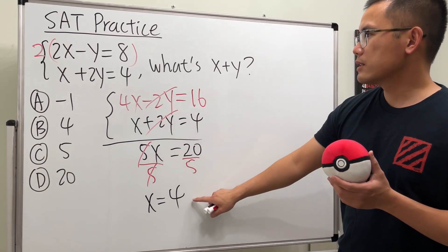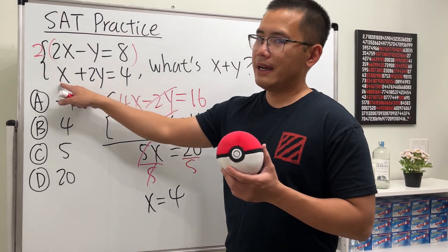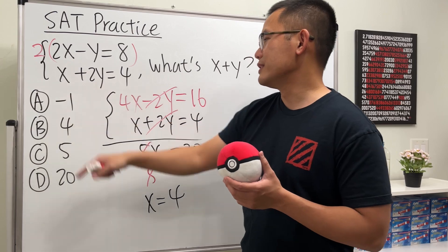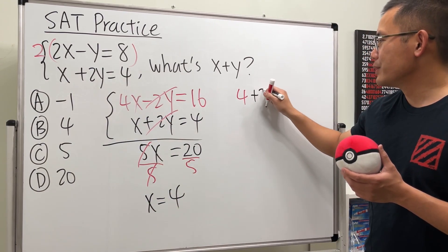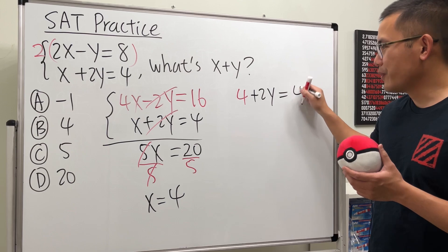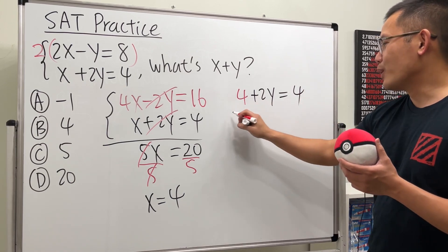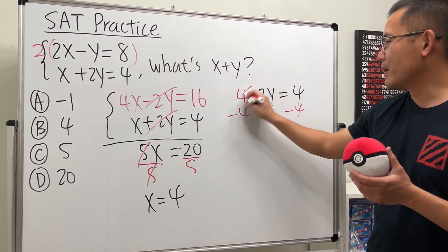Okay, and then let's go ahead and put 4. I know what y is already. Let's put it into this equation. We will get 4 plus 2y, that's equal to 4. Minus 4 on both sides. Yeah, y will be zero, but I'll show you the